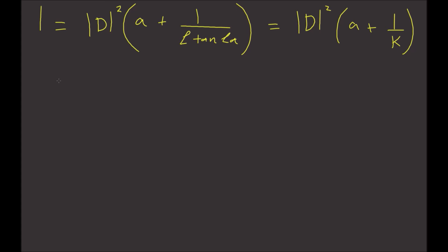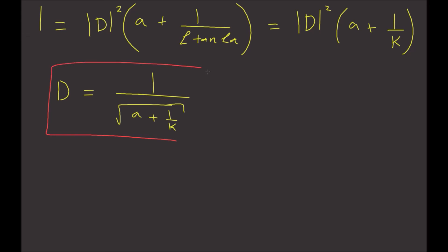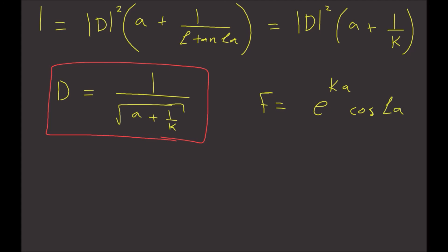Solving for D, we get D equals 1 divided by the square root of A plus 1 over K. Furthermore, F equals e to the kA times cosine of La divided by the square root of A plus 1 over K. There you have it — these are your normalization constants.